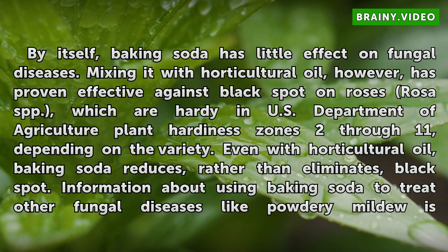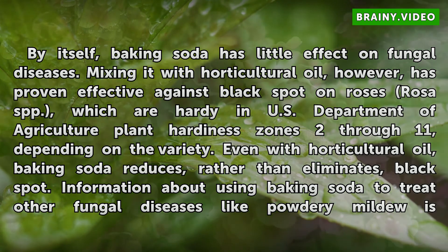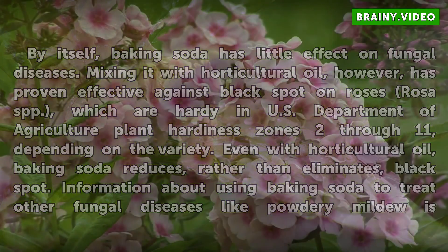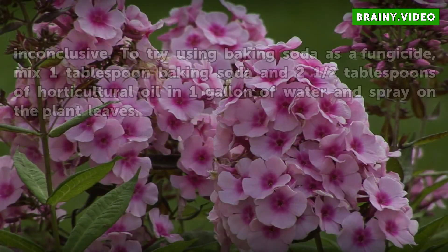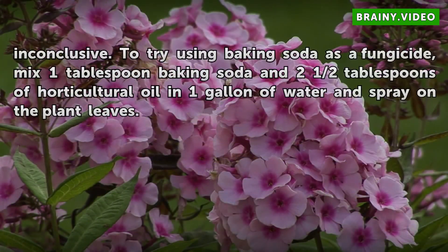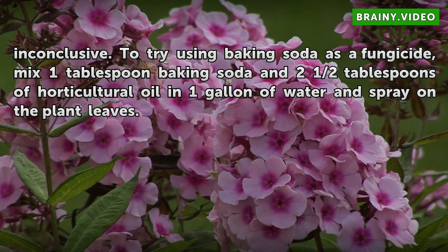Information about using baking soda to treat other fungal diseases like powdery mildew is inconclusive. To try using baking soda as a fungicide, mix one tablespoon baking soda and two and a half tablespoons of horticultural oil in one gallon of water and spray on the plant leaves.